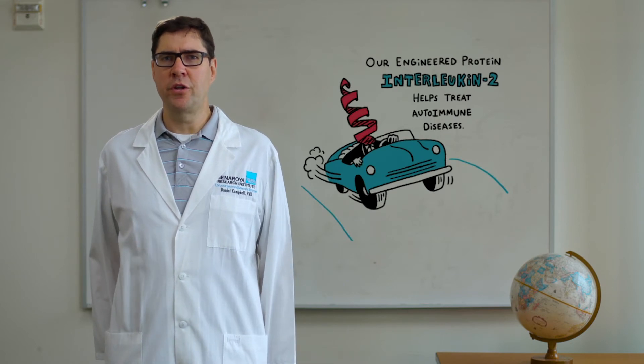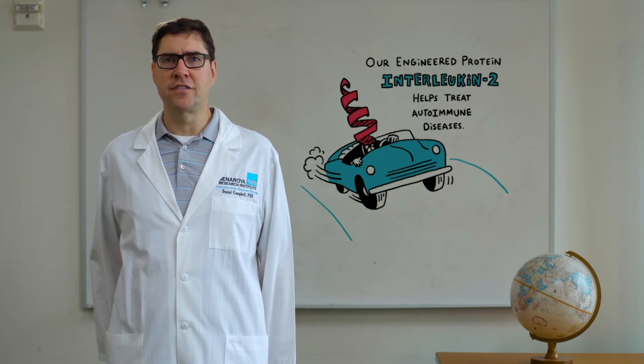In patients with autoimmunity, this system malfunctions and the brakes don't work. We've engineered a version of interleukin-2 that can only hit the brakes and we found that in a mouse model of type 1 diabetes, treatment with this version of interleukin-2 arrests ongoing autoimmunity and provides sustained protection from disease.